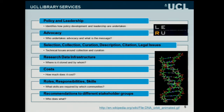When we wrote the LERU roadmap about two years ago, we divided the topics into these chapter headings: policy and leadership, advocacy, some technical and library administrative issues around selection, metadata, description, curation, citation, and legal issues. We also talked about research data infrastructure with some case studies, costs, roles and responsibilities and skills, and then made some recommendations.